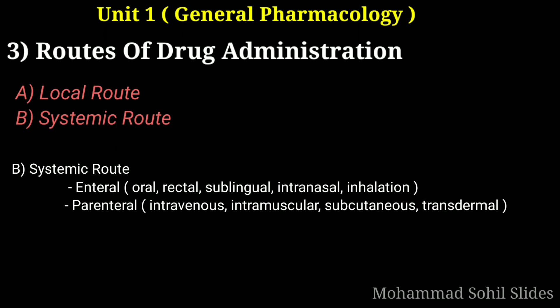Now coming to the systemic route. Systemic route means the drug is absorbed into the blood and distributed all over the body. First is oral route, where the drug is administered orally. Second is sublingual — the tablet containing the drug is placed under the tongue or crushed and spread over the buccal mucosa below the cheeks and gums. Third is rectal route — irritant and unpleasant drugs can be put into the rectum as suppositories or retention enemas. Fourth is cutaneous — highly lipid-soluble drugs are applied over the skin for slow, prolonged absorption using a transdermal patch. Fifth is inhalation — volatile liquids and gases are given by inhalation for systemic action, and absorption takes place from the vast surface of the alveoli.